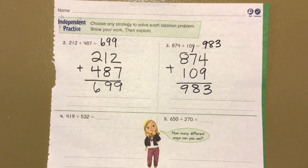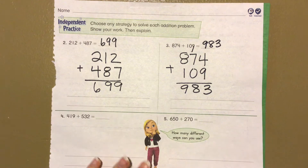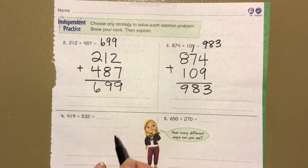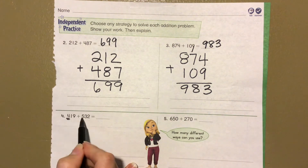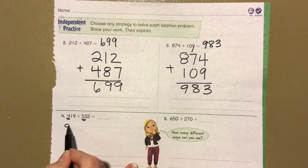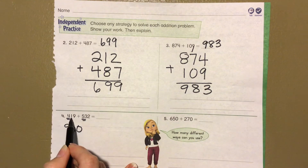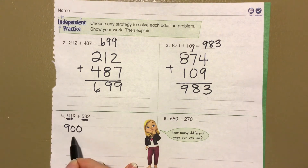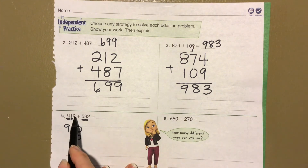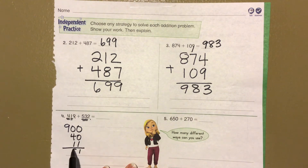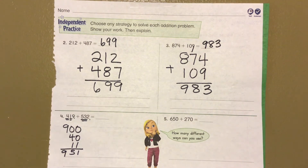There are many different ways we can do this — draw it, use partial sums. On this one I'll do partial sums: 400 plus 500 is 900; 1 plus 3 is 4, so 40 in the tens; 9 plus 2 is 11. That gives an answer of 951.